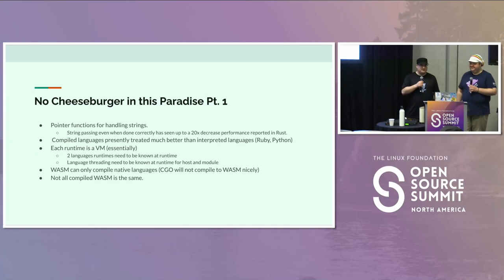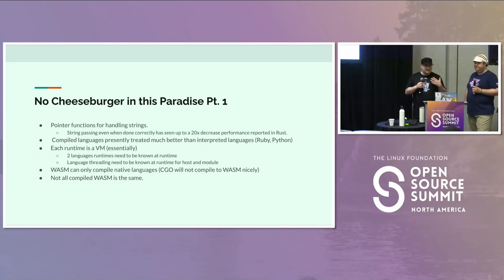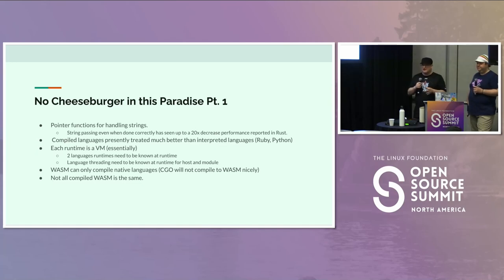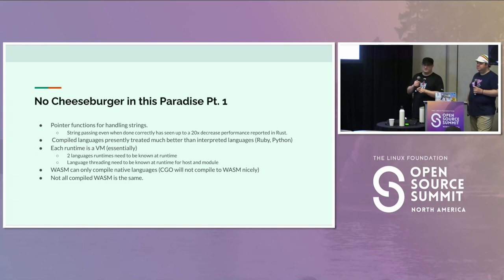Now the problems. For handling strings, you have to do pointer arithmetic — not fun, not ideal. If you're going Rust to WASM, this is where you'll have your largest performance penalty. In some cases there's been a reported 20x performance loss, mostly due to the time to pass pointers for strings. So if you have a native web developer with a JSON response to parse, please note that may significantly impact your runtime performance.